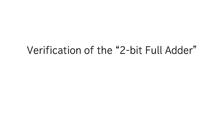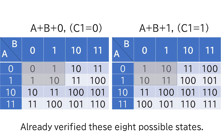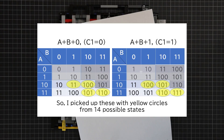Verification of the 2-bit full adder. There are 32 possible states to verify. I've already checked the circuit working correctly in all states. However, in this video it's too many to show all of them, so I need to select several states for verification. We've already verified the single-bit full adder for 8 possible states, and by considering the symmetry of the addition table, we can reduce to 14 possible states. So I picked up 8 states with yellow circles.